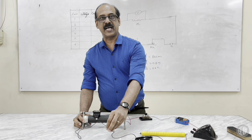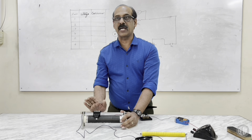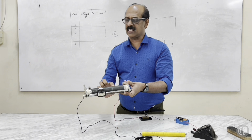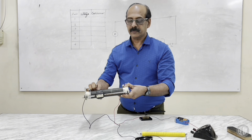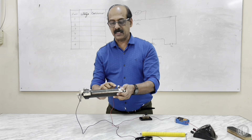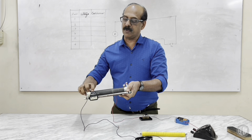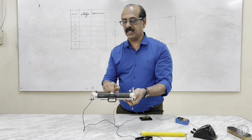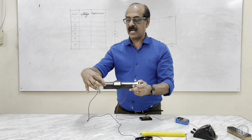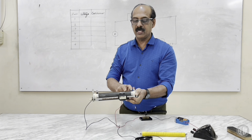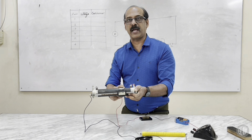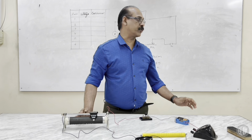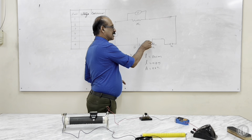This is a rheostat — a current controlling device. A manganin wire is wound and connected to a metal strip. To increase resistance, push the slider to one end so current has to travel the full length, making resistance maximum. To reduce resistance, move the slider closer so current travels a shorter distance through the wire. This is the purpose of the rheostat as the current control unit.